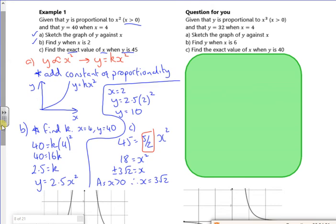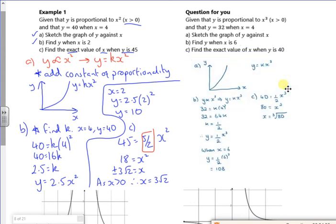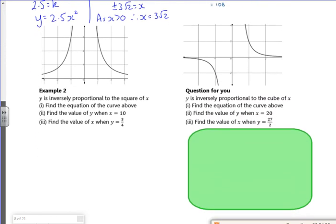Right, there's one there for you. Question for you, same idea, but it's to x cubed. So make sure you've got that. Then we've got another one, which is a 1 over x squared graph. Looks like a volcano. One for you with a 1 over x squared. So inversely proportional ones.